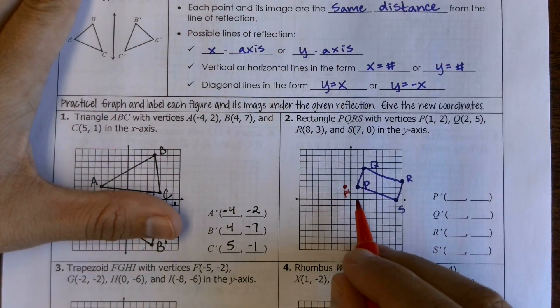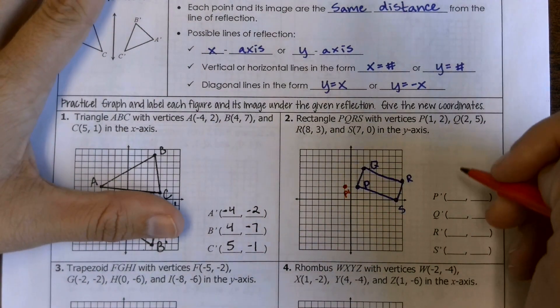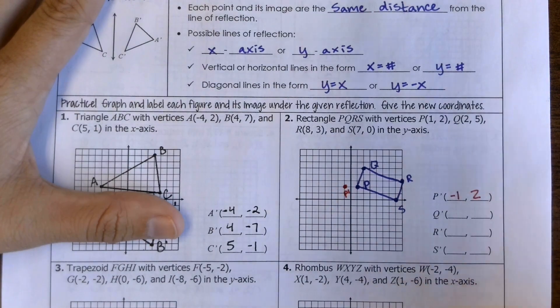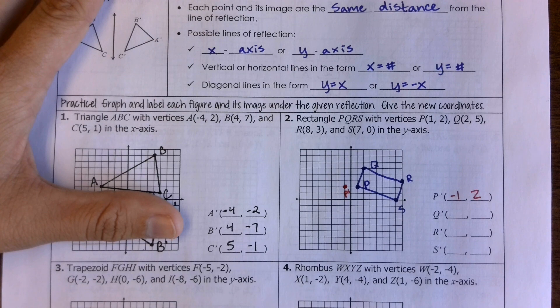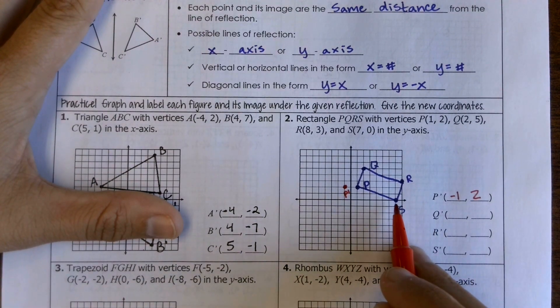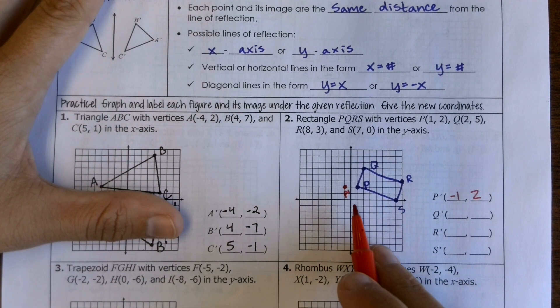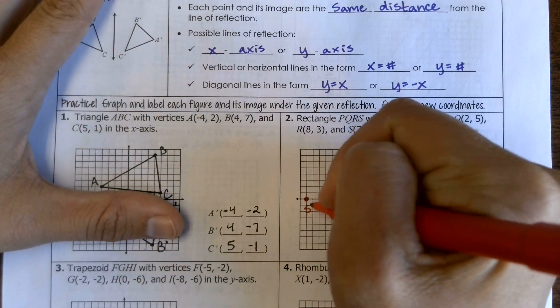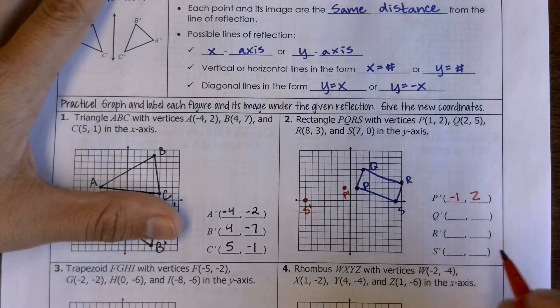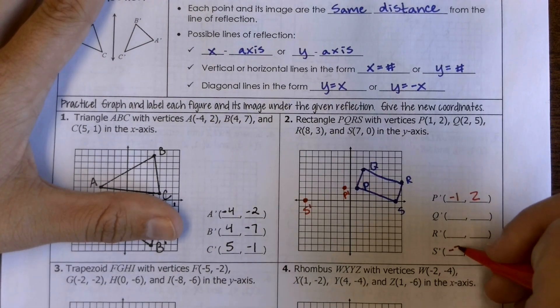With my ordered pair, it's going to be at (-1, 2). So notice this time my x-value is what changed signs. For S, it was seven units away from the y-axis, so now it's going to be seven units away on the other side. So my S prime is at (-7, 0).